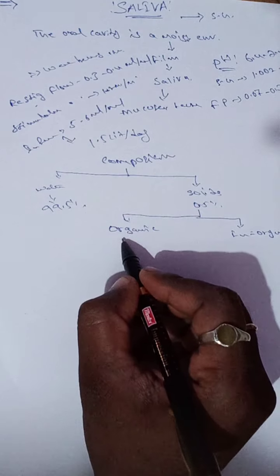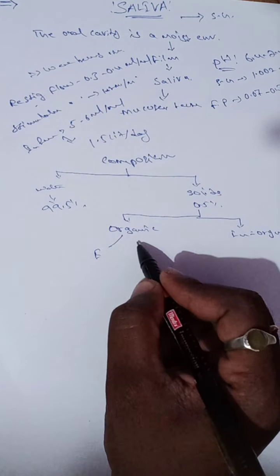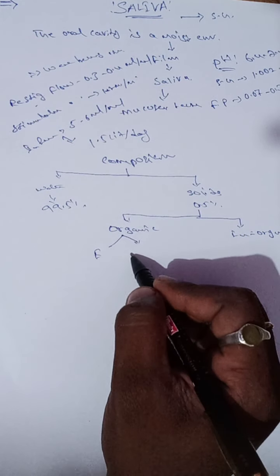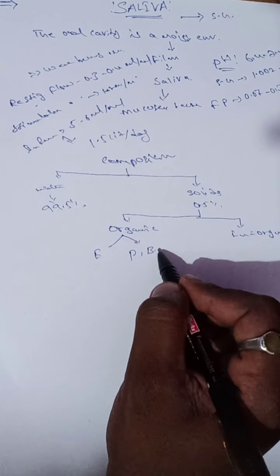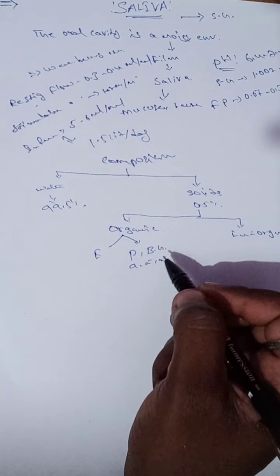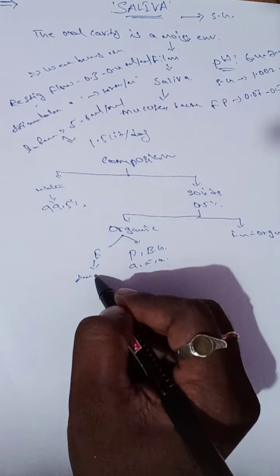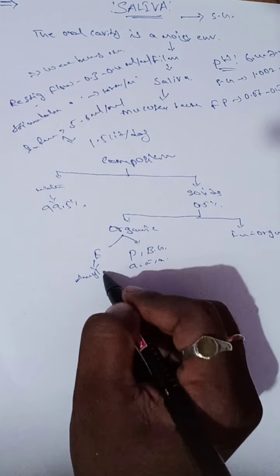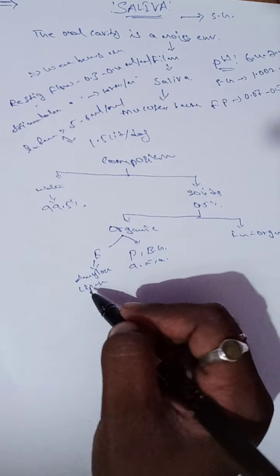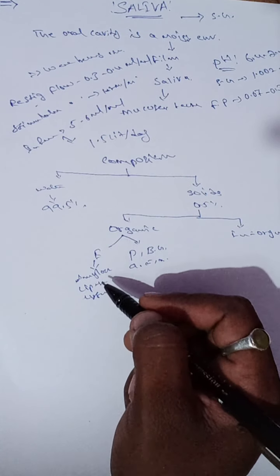Organic substances include enzymes and other organic substances like proteins, blood group antigens, amino acids, nitrogenous compounds, etc. Examples of enzymes are amylase enzyme, lipase enzyme, and lysosomes.